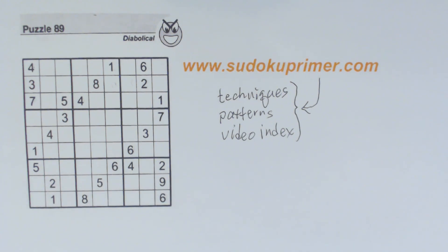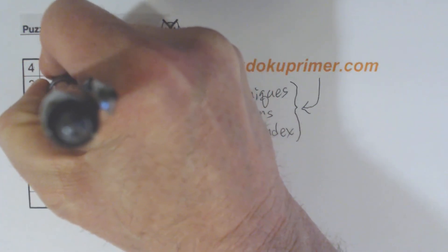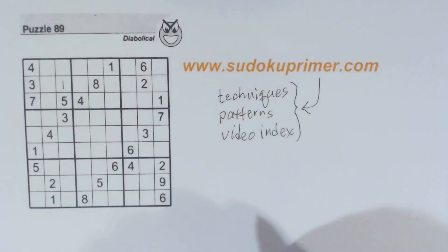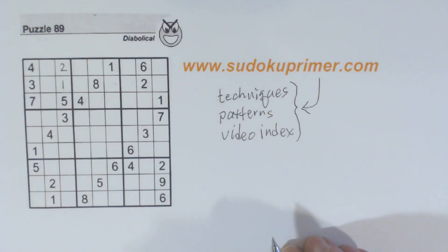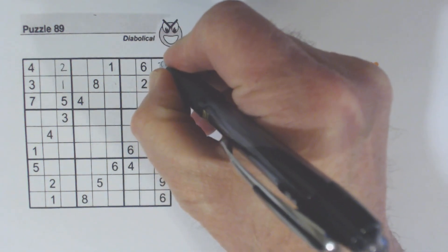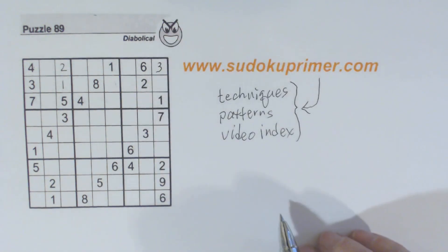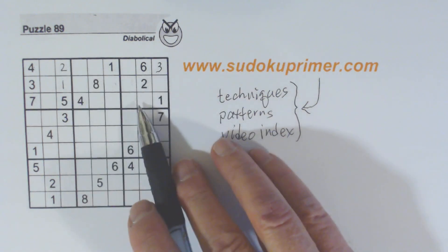So as I mentioned, we're going to solve this diabolical puzzle. As we solve it, we'll find a couple of instances of unique rectangles or URs. I'm just going to start filling in some of the easy numbers here. If you have a question about how I got some of these numbers, you can leave a comment and I'll try and answer. Those three numbers are really straightforward.